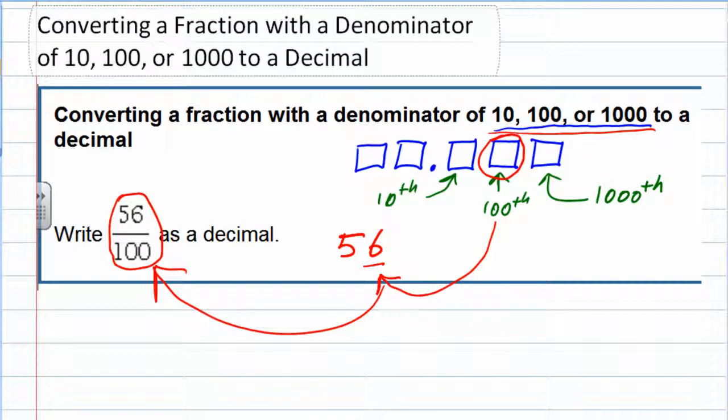That has to be in the hundredths place. And this, again, goes back to the fact that my denominator is 100. So, if I have those numbers, the 5 and the 6, and I need the 6 to be in the hundredths place, the decimal must be here. Because that would put the 5 in the tenths place and the 6 in the hundredths place.